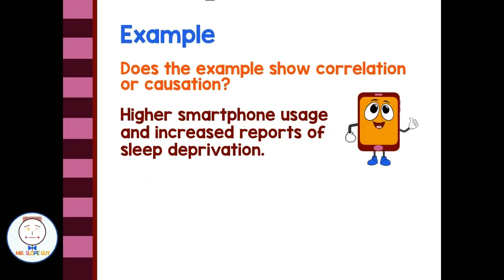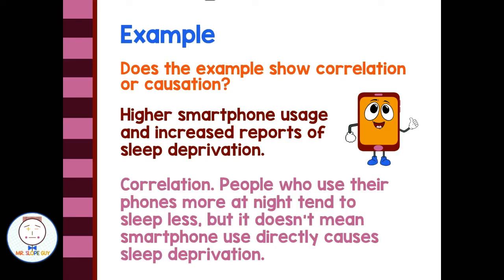Does this example show correlation or causation? Higher smartphone usage and increased reports of sleep deprivation. It's correlation. People who use their phones more at night may tend to sleep less, but it doesn't mean that smartphone use directly causes sleep deprivation — there could be other variables also affecting that.